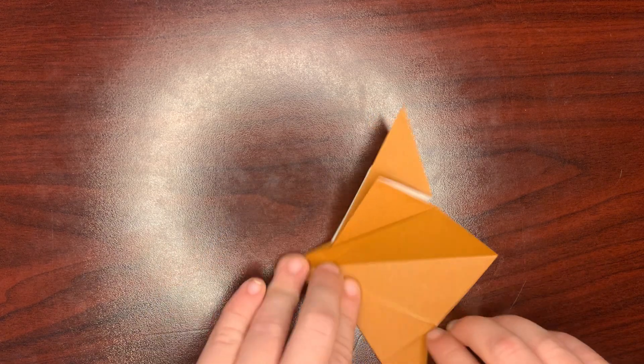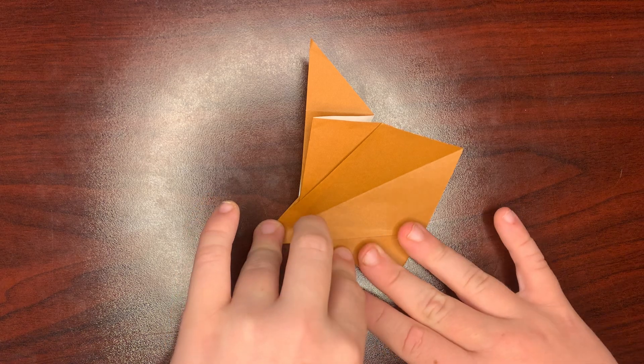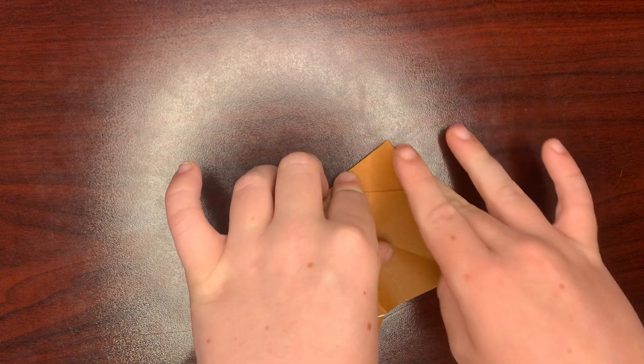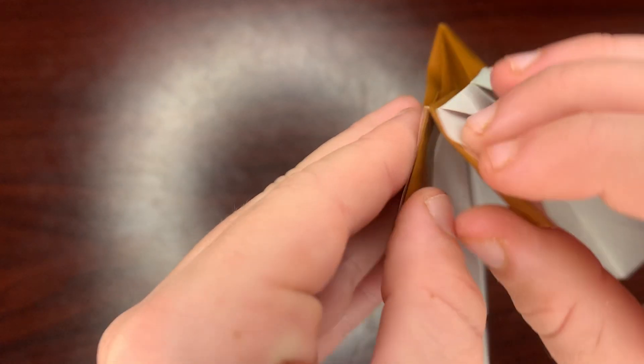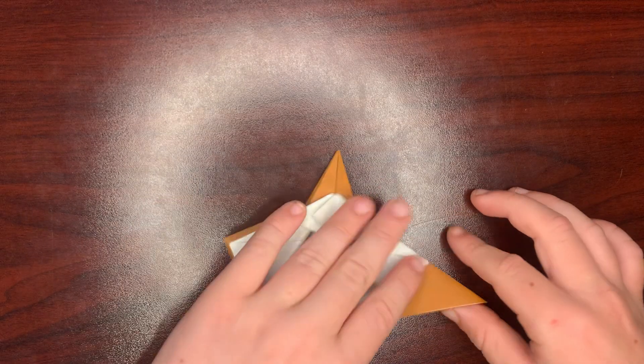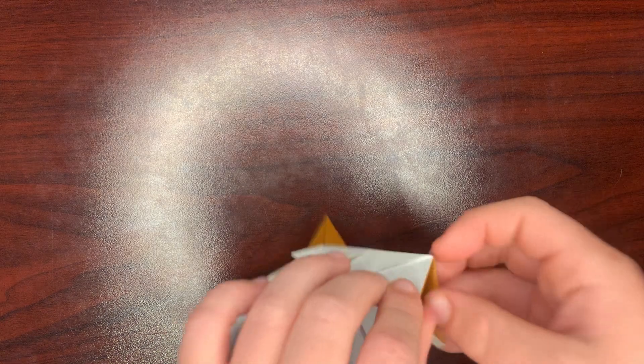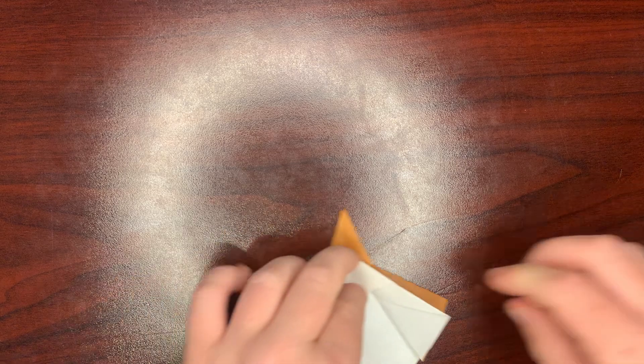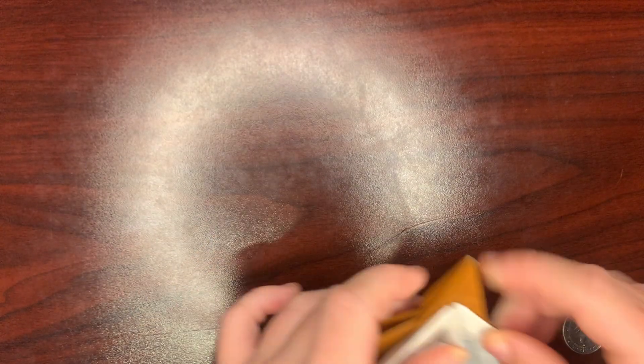You're going to want to fold this flap along here, do the same thing on your side. Open this flap up and fold that inside of the plane, same thing on your side. See this flap here? That's going to become the air intake of the plane.